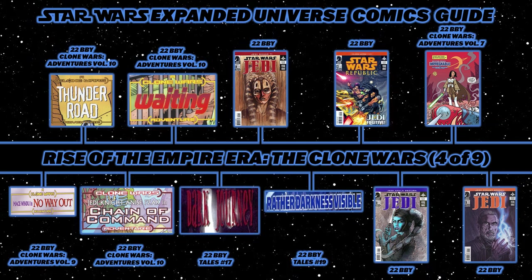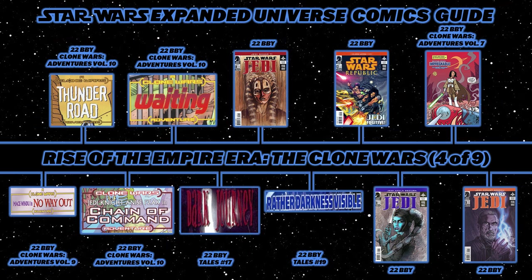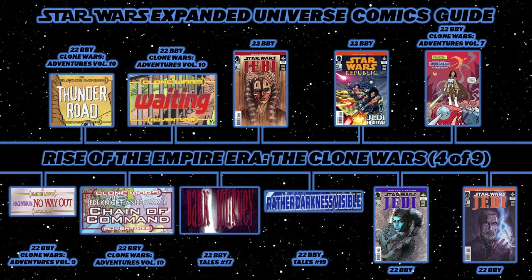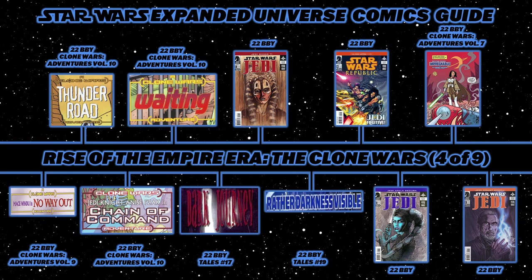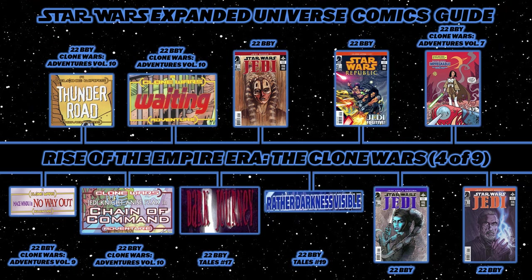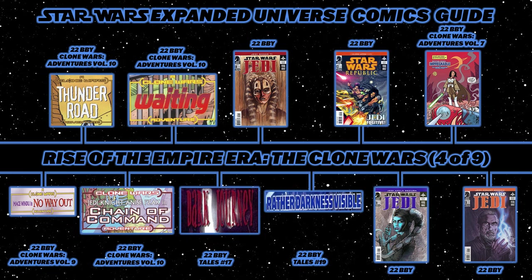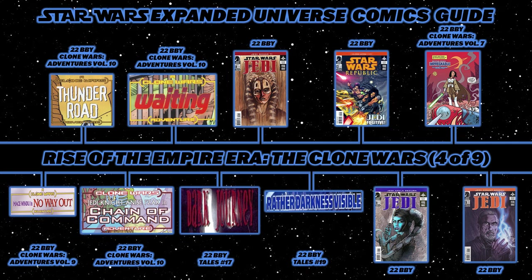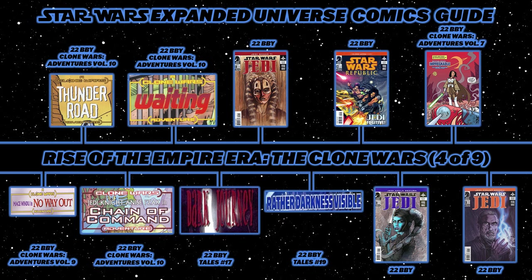Jump back to Star Wars Tales number 17 for Dark Journey. Then Jedi one-shot Shaak Ti, seeing Shaak Ti go on the offensive on war-torn planet Brintaal IV. Then Star Wars Tales number 19's Rather Darkness Visible. Back to Republic issue 54, Double Blind, again following Quinlan Vos. Next Jedi one-shot: Aayla Secura, going undercover to ferret out a Separatist enclave. Back to Clone Wars Adventures Volume 7 for Impregnable, starring Barriss Offee. Then the fourth Jedi one-shot: Count Dooku, seeing Quinlan Vos pose as a Republic renegade to earn Dooku's trust.